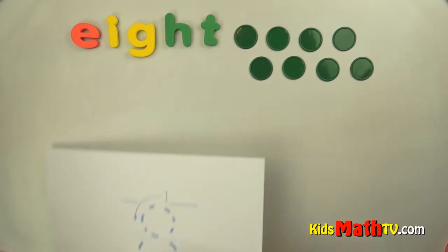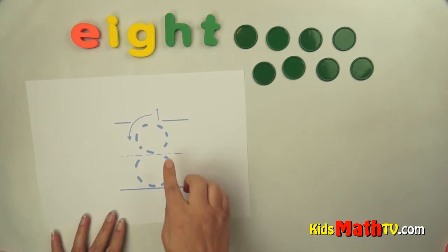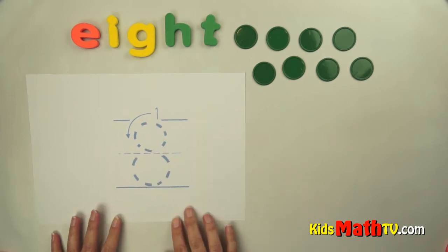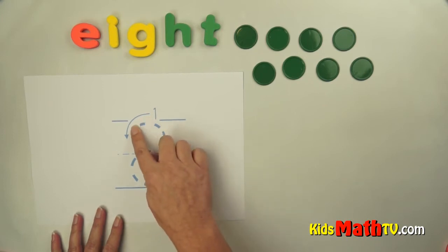To write the number eight, we use one stroke. We're going to start at the top. We go around and around and around and back up to the top. An eight. It goes around one way and it goes around the other way and back up to the top.